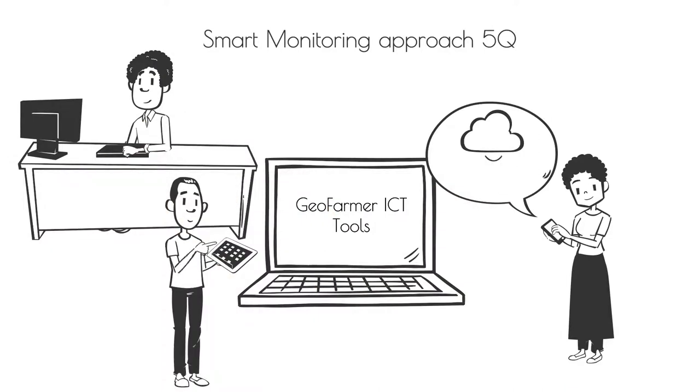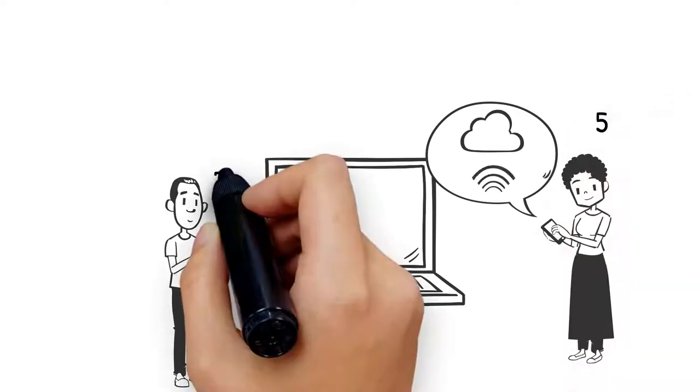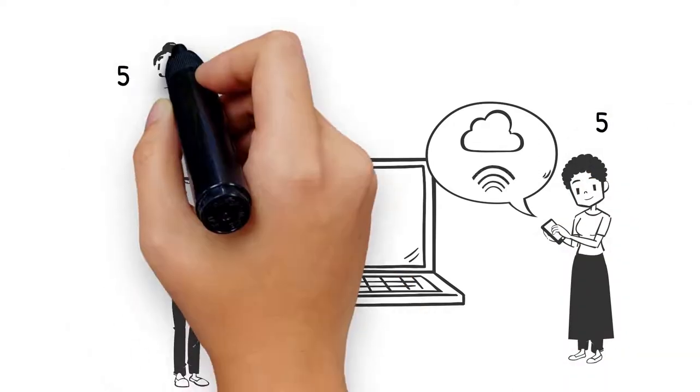Combined with the GeoFarmer ICT tools, a system which collects massive amounts of data, it gives location-based feedback for experts and farmers that can be used to adjust interventions.